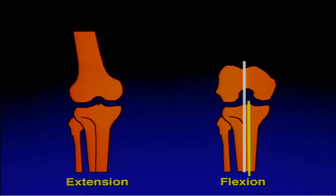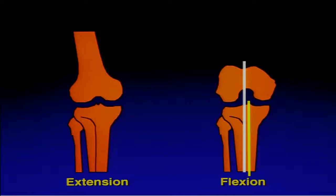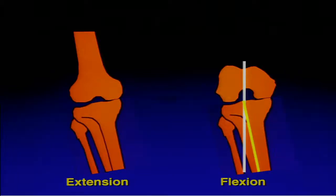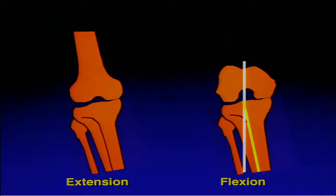In extension, there is a slight valgus position, but the mechanical axis is centralized to the knee joint. The flexion AP axis of the femoral condyle — the so-called whiteside line — is parallel to the axis of the tibia. This is a normal knee. However, in the valgus knee, in extension there is valgus, and the tibia axis is not parallel to the whiteside line. This distinction between extension and flexion alignment is a concept that should be understood.